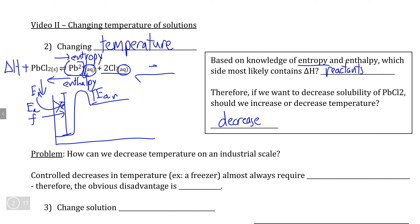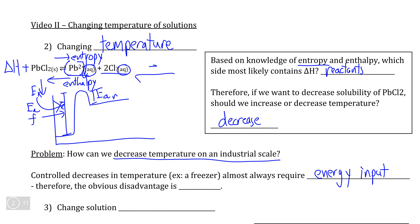So if this is so intuitive, why don't we do it on an industrial scale? Can you think of a way that we can easily decrease the temperature of an entire river's water supply on an industrial scale? Short of pumping an entire river's water through a freezer, this is basically impossible. Controlled decreases in temperature — for example, using a freezer — almost always require a large energy input. The primary barrier to this is the cost of electricity.